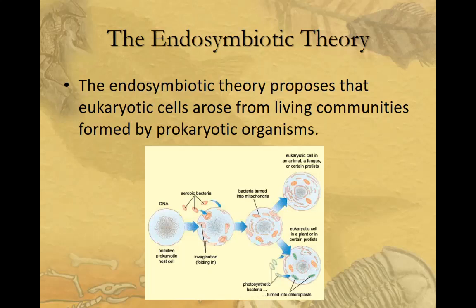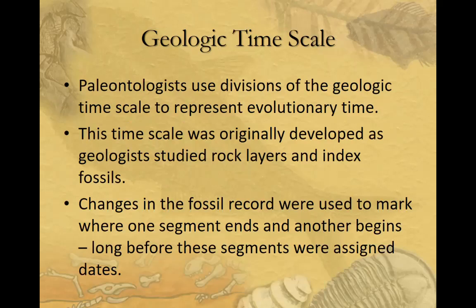To look at organisms as they develop into what we think of as life on Earth, we use the geologic time scale. Paleontologists use divisions of the geologic time scale to represent evolutionary time. It was originally developed as geologists studied rock layers and index fossils, naming time periods without fixed dates. Changes in the fossil record marked where one segment ended and another began. Later, as radioactive dating was developed, dates were added to these time periods.